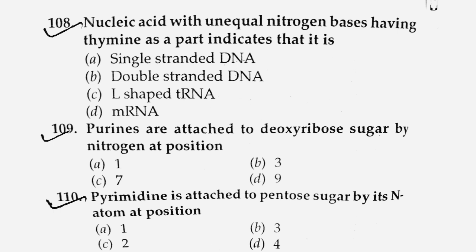First question: A nucleic acid with unequal nitrogen bases having thymine as a part — does it indicate single-stranded DNA, double-stranded DNA, L-shaped tRNA, or mRNA? The answer is single-stranded DNA.